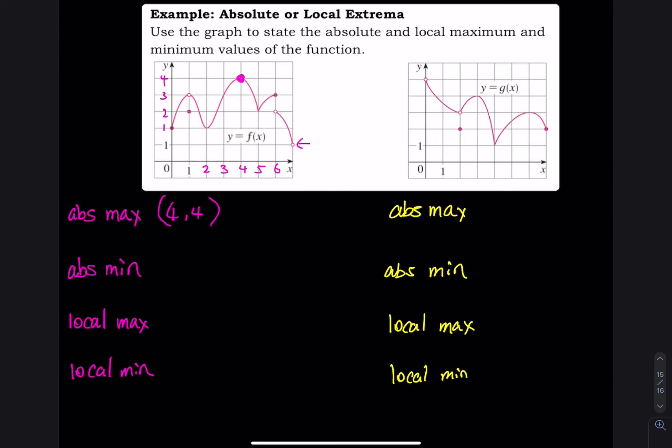For the absolute minimum, the lowest y value appears to be right here, but that point is not a solid point. When x equals 7, y is undefined, so the absolute minimum is none.